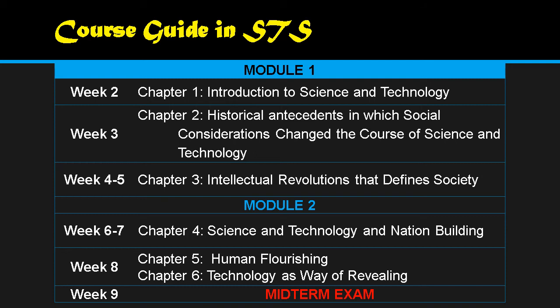Now we have the course guide in Science and Technology. For the midterm, we have two modules. Module one covers the following topics: introduction to science and technology, historical antecedents in which social consideration changed the course of science and technology, and the intellectual revolution that defines society. Module two covers science, technology, and nation-building; human flourishing; and technology as a way of revealing. After these, we'll have your midterm exam.